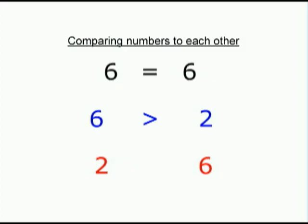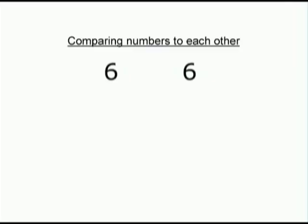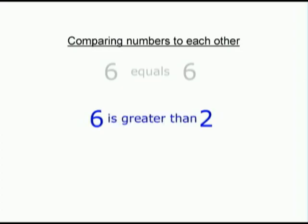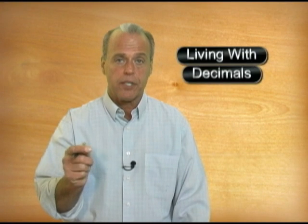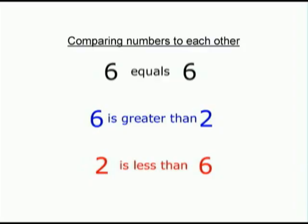The problem most people have is remembering what the specific symbol means. Let's see if we can figure out an easy way to remember the definition of these symbols. If we want to compare these two numbers to each other, we read it as 6 equals 6. If we want to compare these two numbers in the order written, it's 6 is greater than 2, or 6 is larger than 2, or 6 is bigger than 2. For these two numbers read left to right, it's 2 is less than 6, or 2 is smaller than 6. It's pretty simple to read these numbers if you use words to compare them to each other.